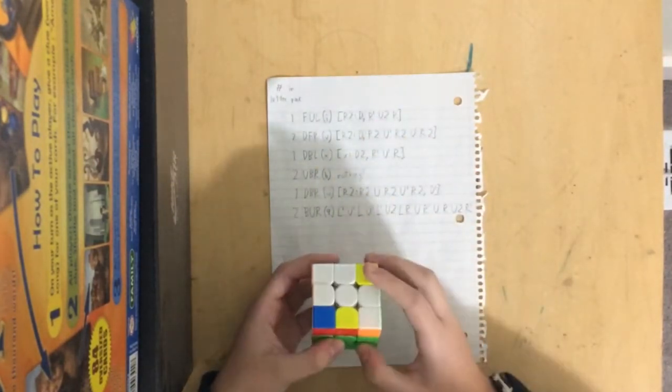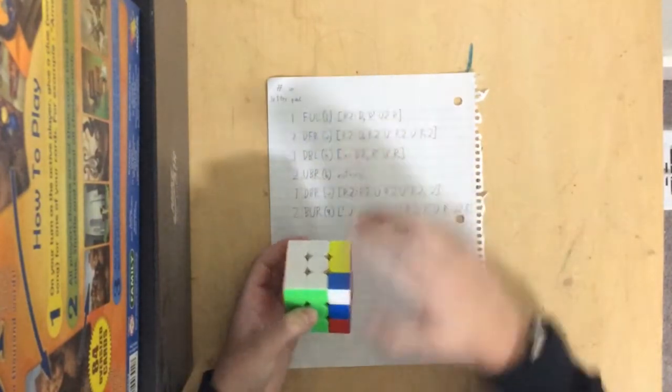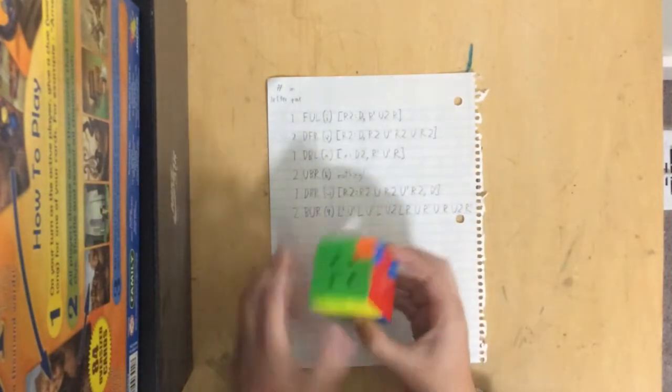So we do R2, U' R2, U, R2, D, R2, U' R2, U, R2, D', and then we finally reverse that R2 at the beginning. So that solved V.